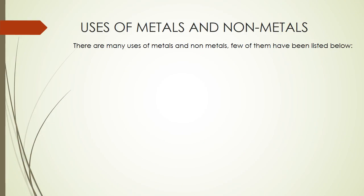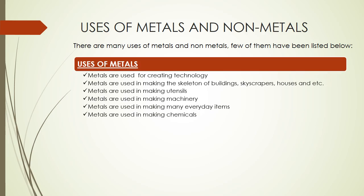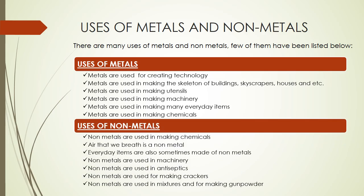Uses of metals: metals are used for creating technology, making skeletons of buildings and skyscrapers, making utensils and machinery, and making chemicals. Uses of nonmetals: nonmetals are used for making chemicals, the air we breathe is a nonmetal, they are used in everyday items, machinery, antiseptics, making crackers, mixtures, and gunpowder.